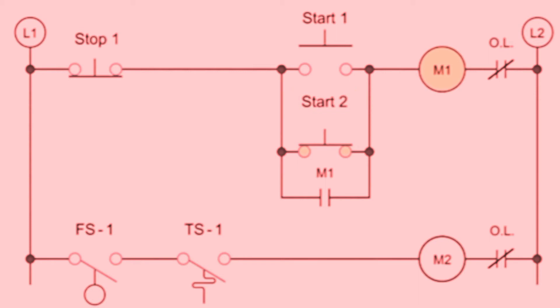With M1 energized, another type of control logic is exhibited, called memory logic. The energized M1 coil will cause the auxiliary contact M1 to automatically close.